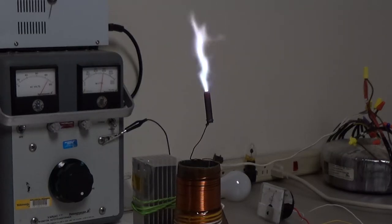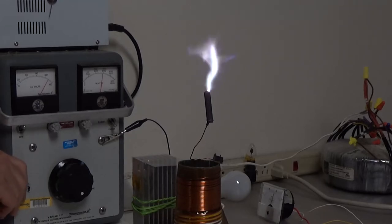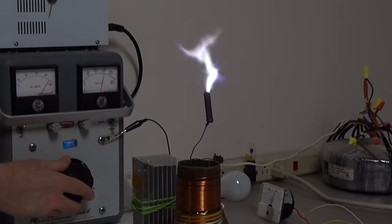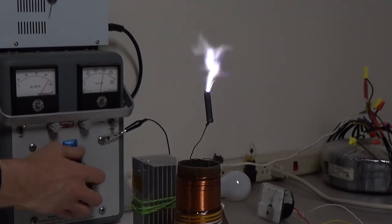You can see a very dim red glow at the top of the rod from the heat. Perhaps that's not enough to cause thermionic emissions, so the arc's wandering because it's still mostly field emission.